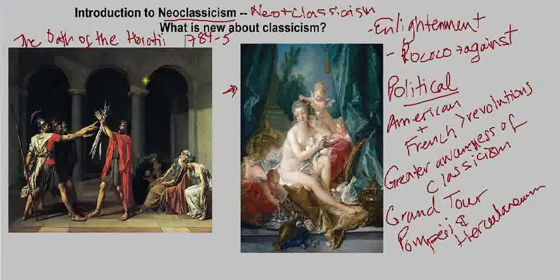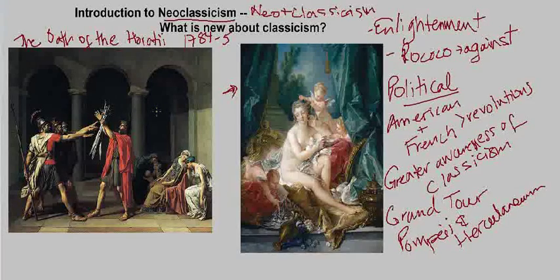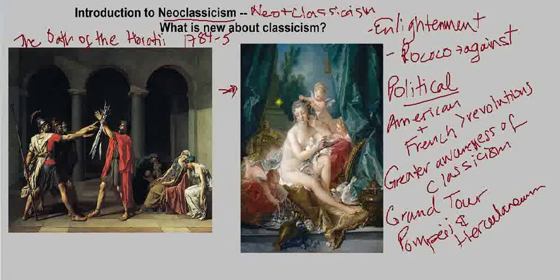This is also typical of neoclassical painting in the approach to the subject and the way it's painted. The sumptuous softness of Boucher is replaced with sharp, clear lines and more rigid forms. We also have a much more restrained use of colorism — there's hardly any color in the David at all, just a little bit of red and a little bit of blue — whereas Boucher has rich shades of blues and pinks and golds.